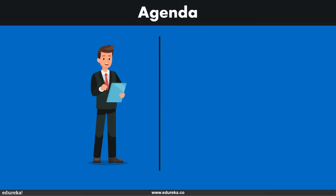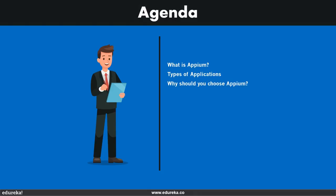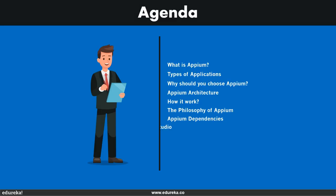Firstly, we will be looking into a tool called Appium. The first topic is what is Appium, then we'll go into the types of applications for the mobile industry. Then we'll discuss why you should choose Appium by comparing it to its market competitors, the Appium architecture and how it works, the philosophy on which Appium was built, the pros and cons, the dependencies, installation of Appium desktop version 1.10 from scratch using Android Studio, and a brief introduction to desired capabilities.